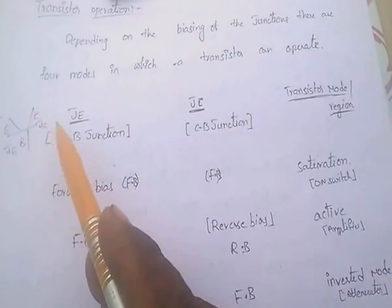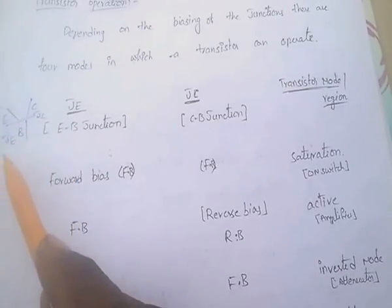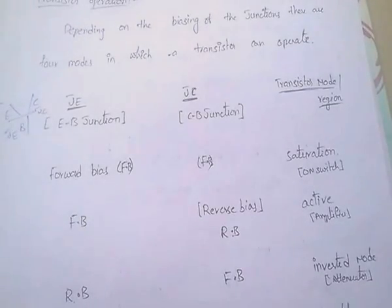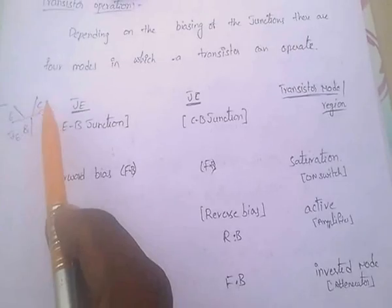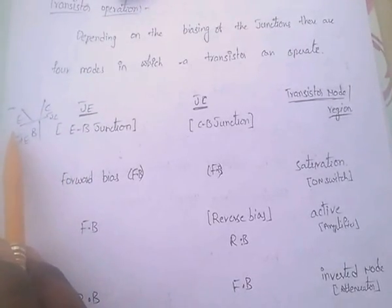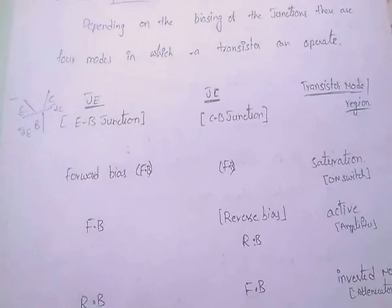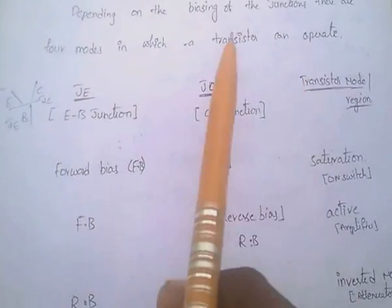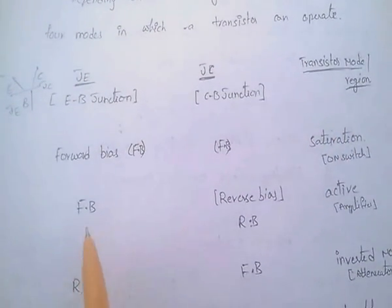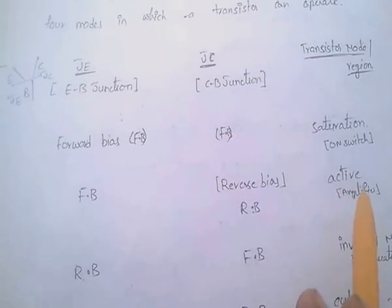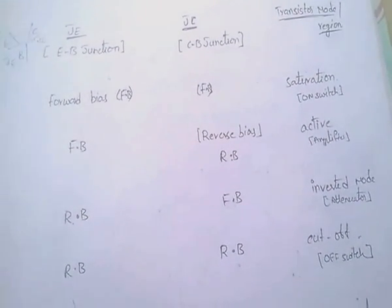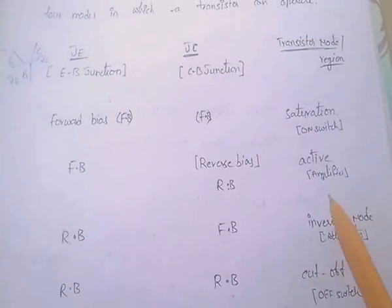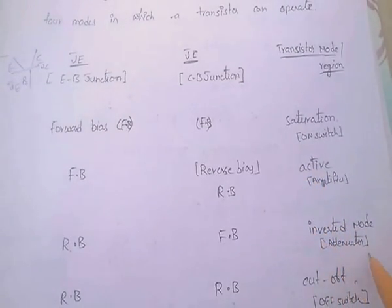When both JE and JC junctions are forward biased, the transistor operates in the saturation region — that is, on switch. When JE is forward biased and JC is reverse biased, it acts as an amplifier in the active region. When JE is reverse biased and JC is forward biased, it operates in inverted mode, acting as an attenuator.